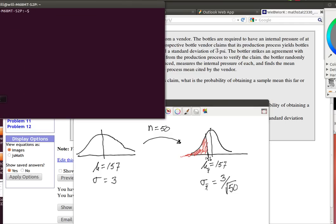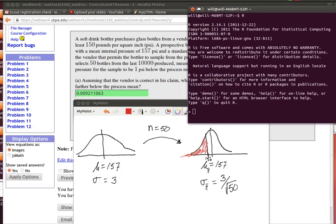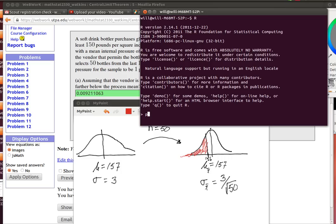Let's just fire up R real quickly. That can be easily calculated by simply looking at the p-norm, because the p-norm finds the area to the left of some particular number of 156 in a distribution that has a mean of 157 and a standard deviation of 3 divided by the square root of 50.